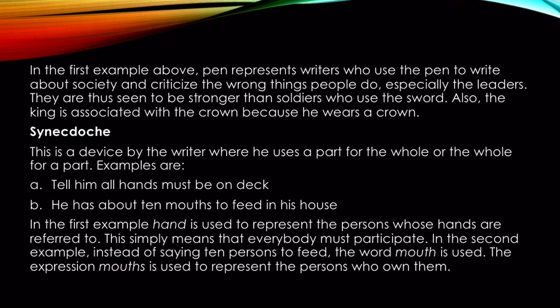So synecdoche is like something where a part represents the whole group. In the first example, 'hand' is used to represent the persons whose hands are referred to — it simply means that everybody must participate. In the second example, instead of saying '10 persons to feed,' the word 'mouth' is used to represent the persons who own them — 'He has about 10 mouths to feed in his house.'